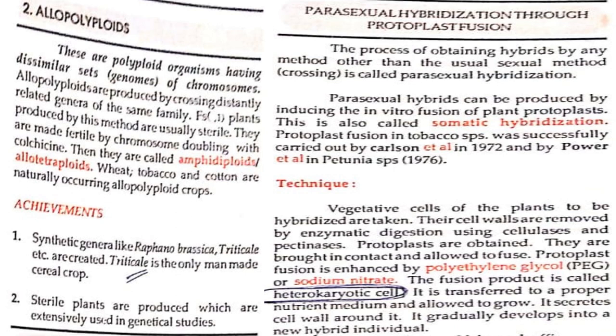Technique: cells of the plants to be hybridized are taken; their cell walls are removed by enzymatic digestion using cellulase and pectinase. Protoplasts are obtained; they are brought in contact and allowed to fuse. Protoplast fusion is enhanced by polyethylene glycol or sodium nitrate. The fusion product is called a heterokaryotic cell. It is transferred to a proper nutrient medium and allowed to grow; it secretes a cell wall around it and gradually develops into a new hybrid individual, such as Nicotiana glauca and Nicotiana langsdorffii.